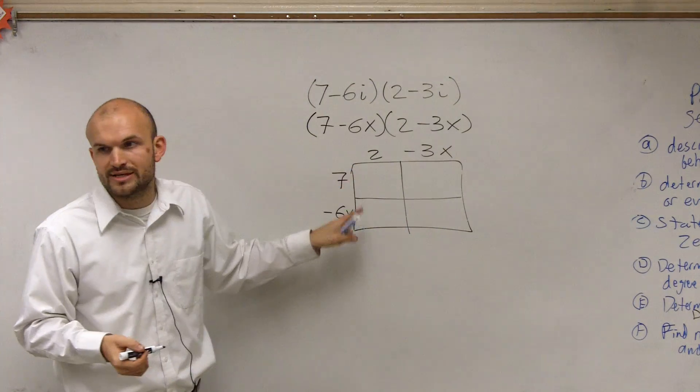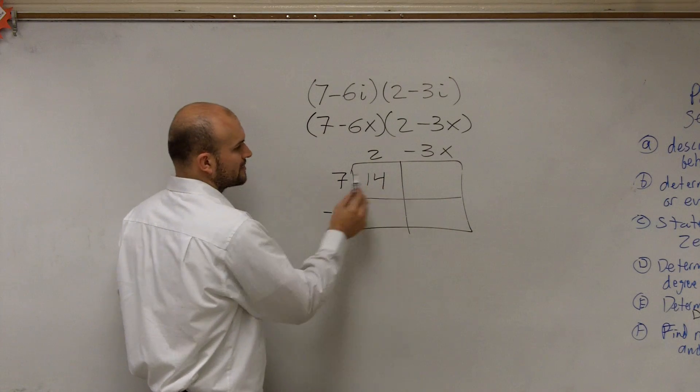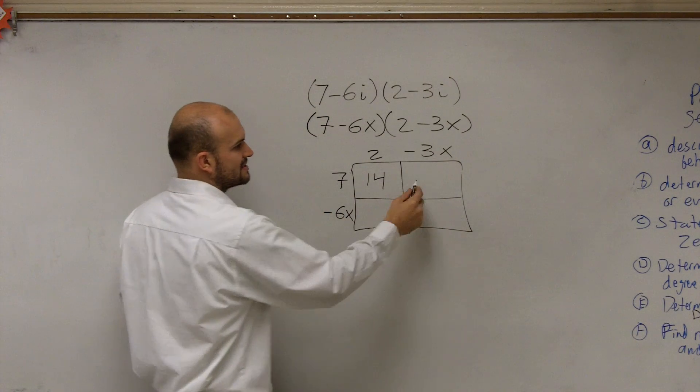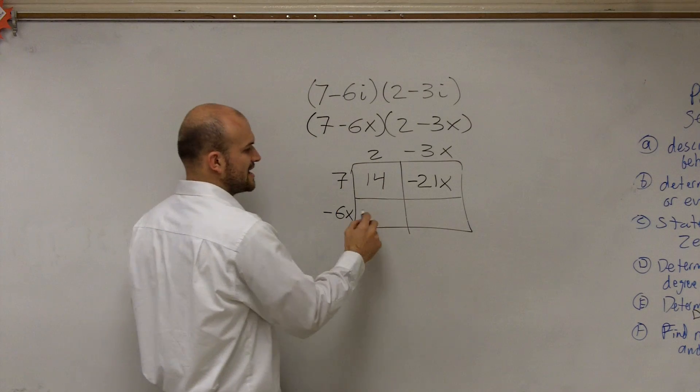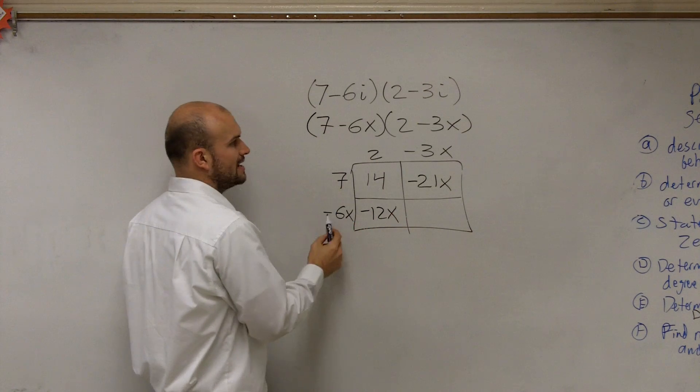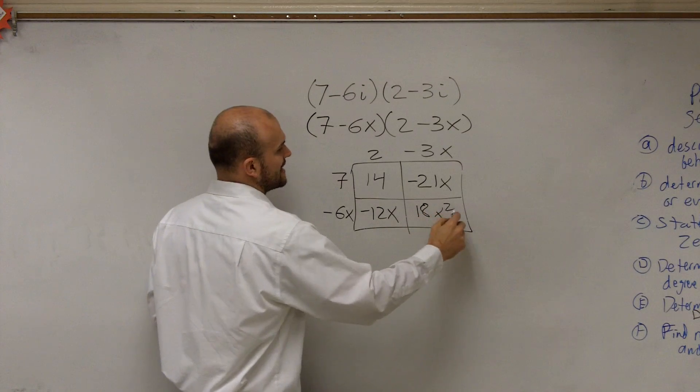Then all you do is multiply your length times your width for each box. So 7 times 2 is 14. 7 times negative 3x is going to be a negative 21x. 2 times negative 6x is negative 12x. And negative 6x times negative 3x is a positive 18x squared.